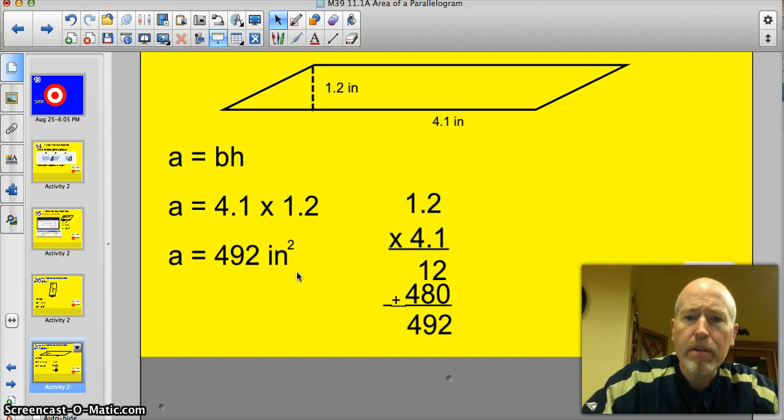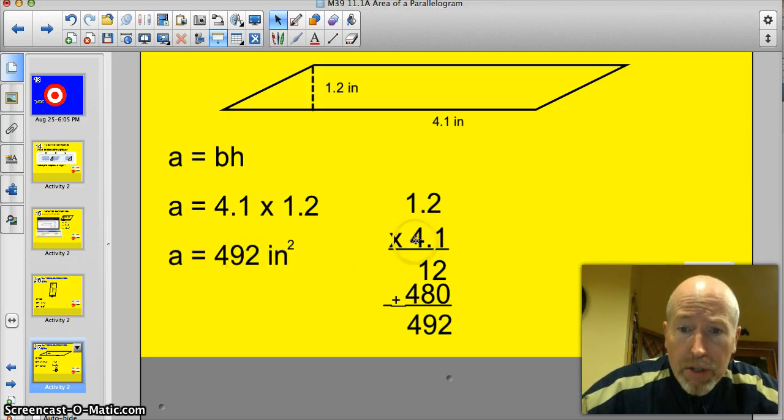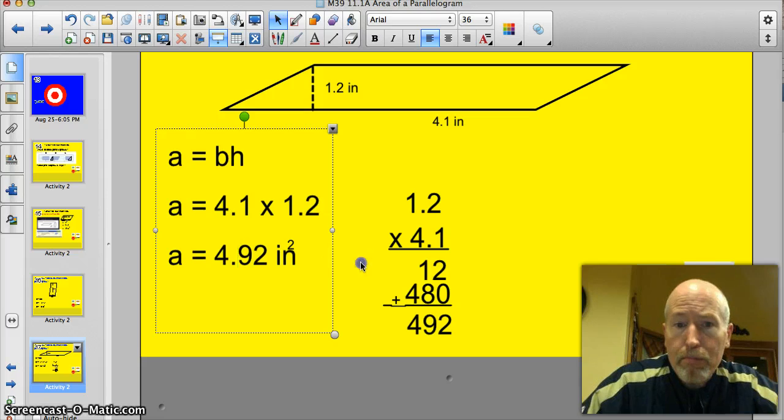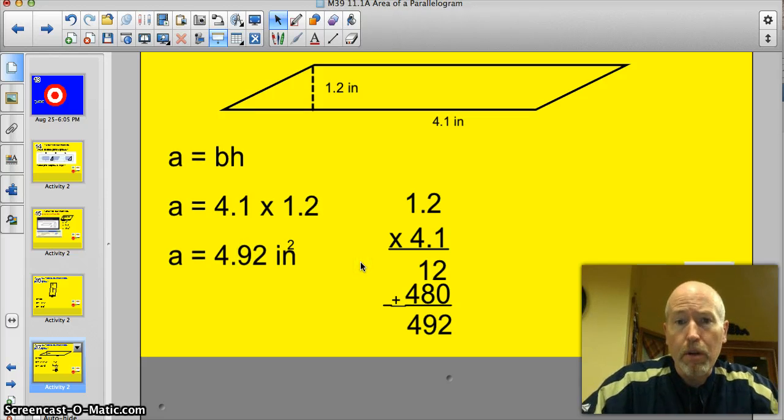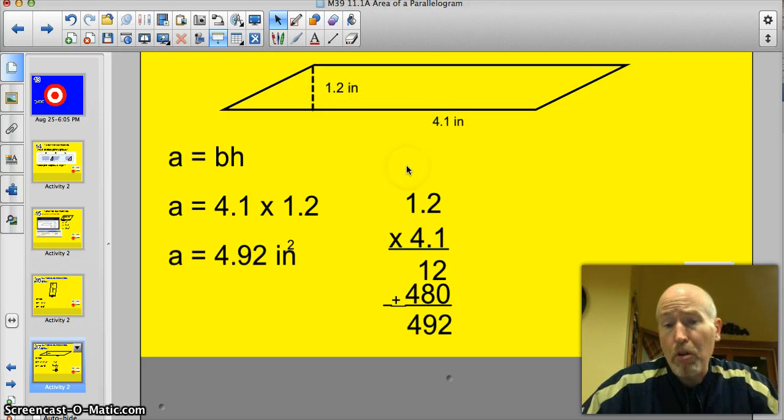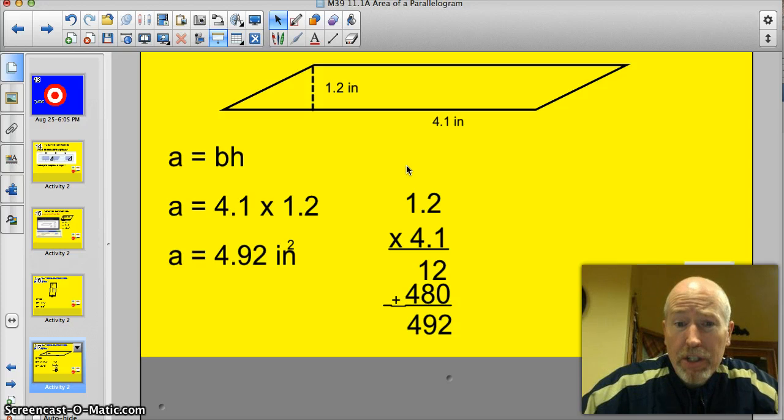492 inches squared. Is there any problem with that answer? Yes, there is. It's not reasonable. You need to insert the decimal. You have one decimal here, one decimal here. So your answer is 4.92. All right, that's why a good idea, a good habit to get into is estimating. Well, I've got about 1 times about 4. So my estimate is about 4 inches squared.